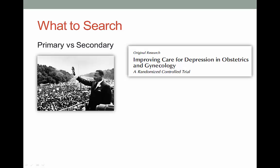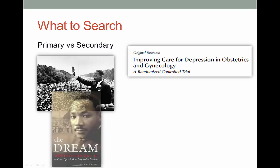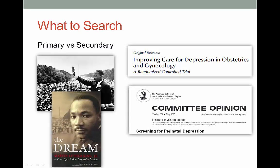Secondary sources are distillations or summaries of the primary source — things that are written or created after the fact. They still have great value, sometimes even more than primary sources, because they can give context and help you understand the primary source. A secondary source in history might be a book written about a famous speech, and in health research it's something that reports on or summarizes original research. Guidelines are frequently examples of this. Generally you're going to be using a variety of source types, and that's okay as each has its own strengths and weaknesses.